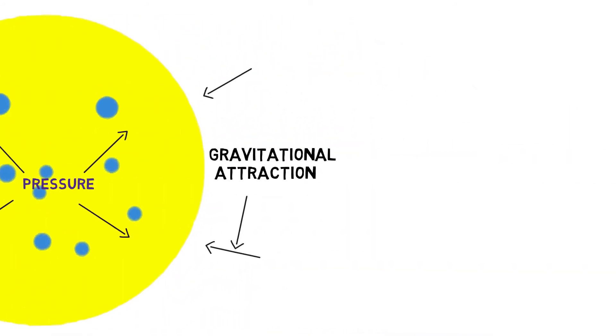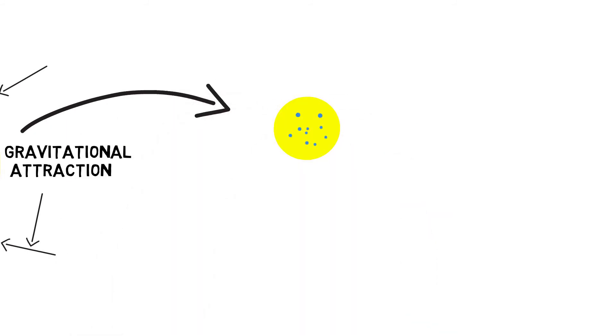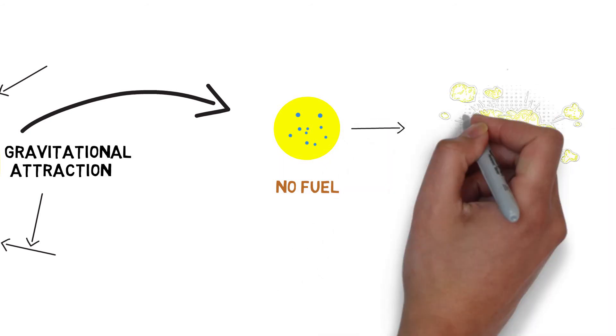Once the star is out of fuel, it starts to cool down, and there is no sufficient force to balance the gravitational pull. Finally, the star will collapse and its outer layer will explode as a supernova.